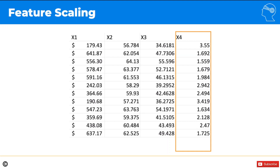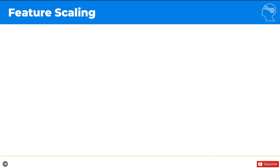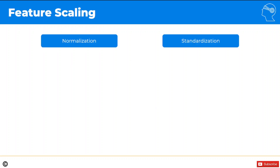With that out of the way, let's have a look at what feature scaling actually is. There are multiple types of feature scaling, multiple techniques. We're going to look at the two main ones: normalization and standardization.